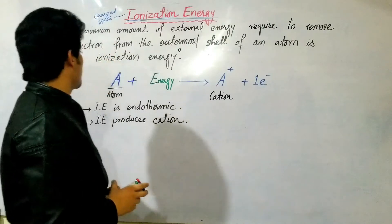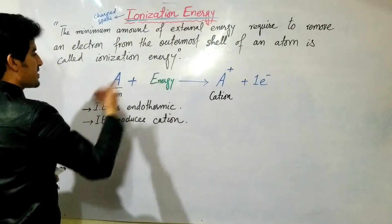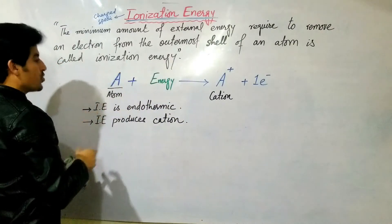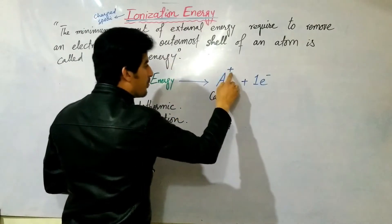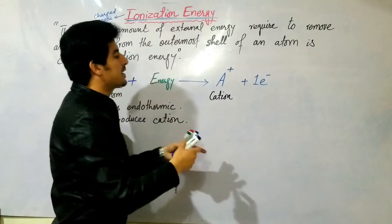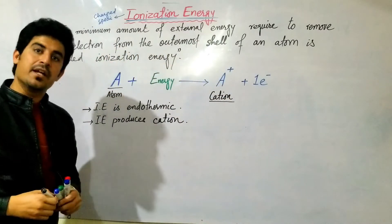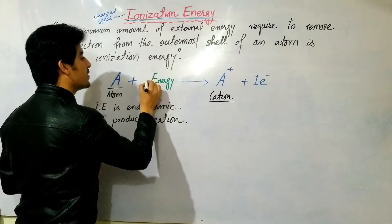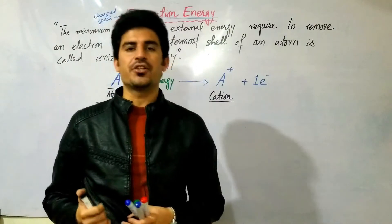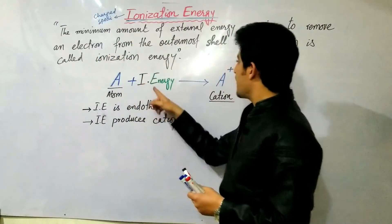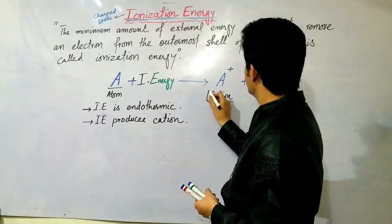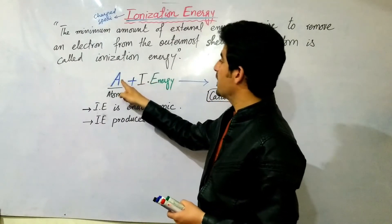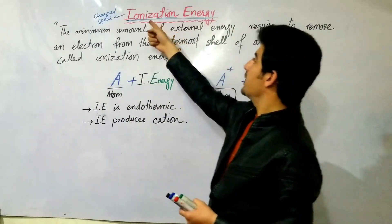Let me express ionization energy with a general example. When ionization energy is applied to an atom, what does it do? It causes ion formation. The energy we applied to the atom for ion formation — that energy is what we call ionization energy. Ionization energy removes an electron from an atom.